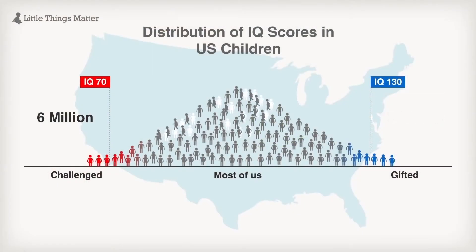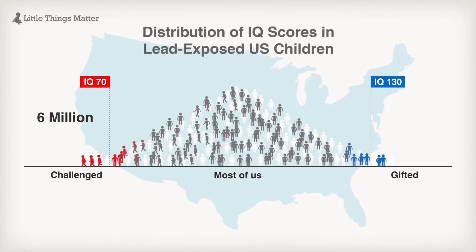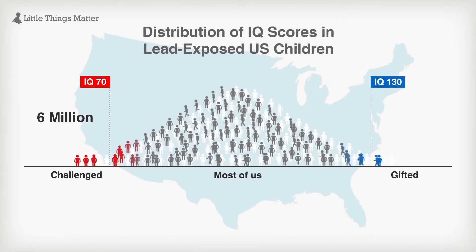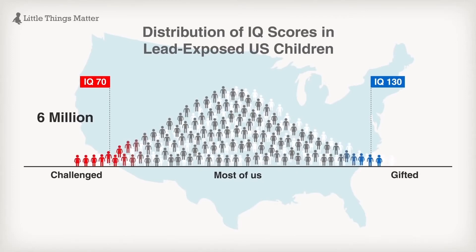For example, every year there are four million children born in the United States. If we look at the impact of low-level lead exposure in the past, it's shifted the entire IQ curve by five points. That means there are 57 percent more children who have an IQ below 70.